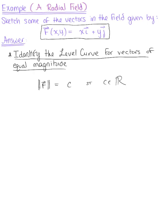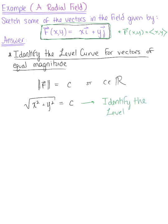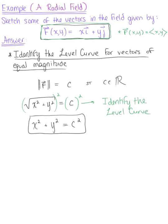For this given radial field with components xy, we can find the magnitude: the square root of x squared plus y squared equals c. Squaring both sides leaves us with x squared plus y squared equals c squared, which we recognize as a circle centered at the origin of radius c.